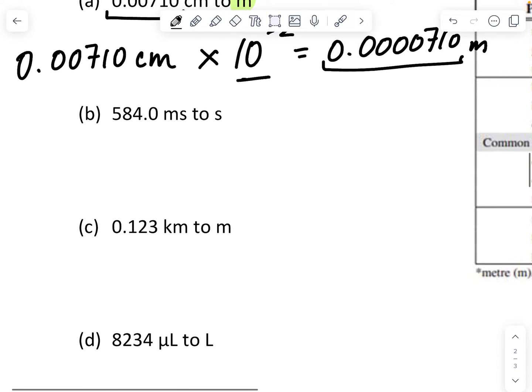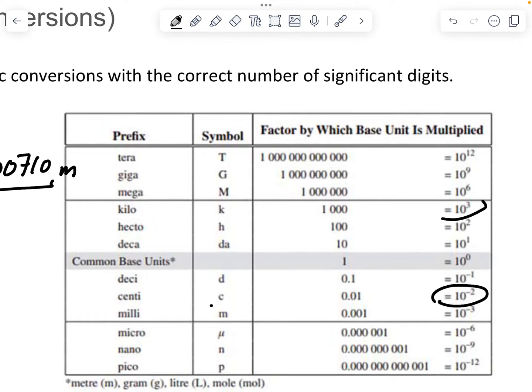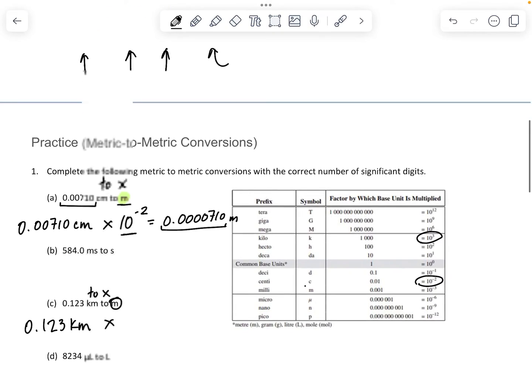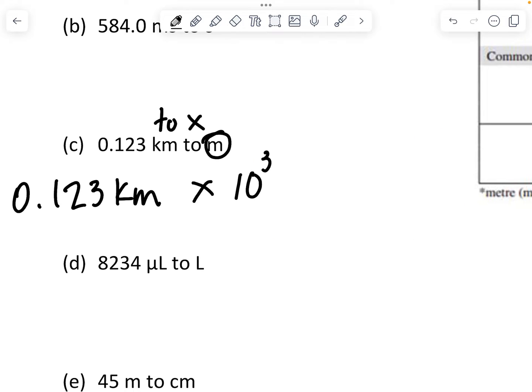If I went, say, from 0.123 kilometers to meters. So that's going to be to the base unit. Because meters are the base unit. Then I multiply. I'm going to multiply by what they've got for kilo. So 10 to the 3 is what I'm going to multiply this by. So I multiply by 10 to the power of 3. And this is going to give me the number of meters. And it'll give me 123 meters.